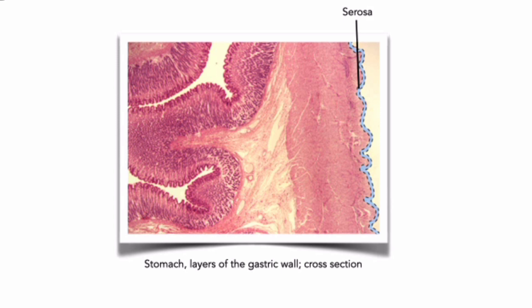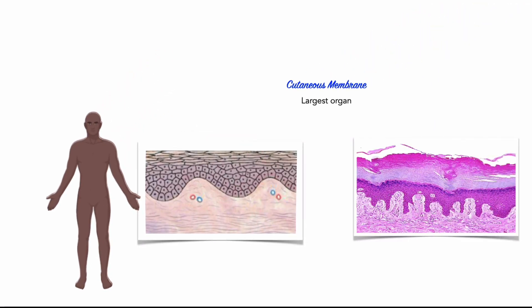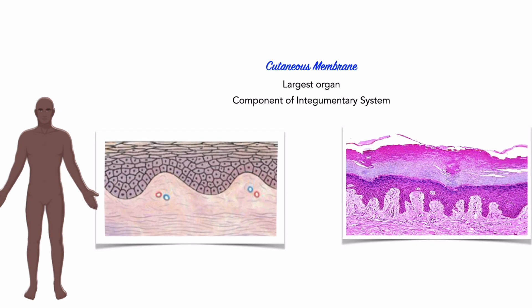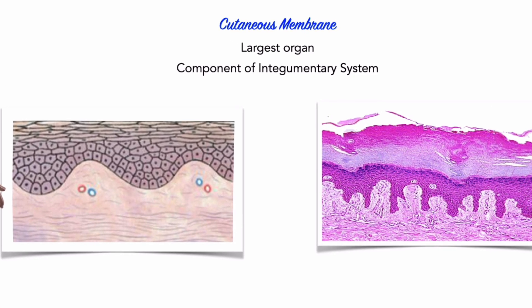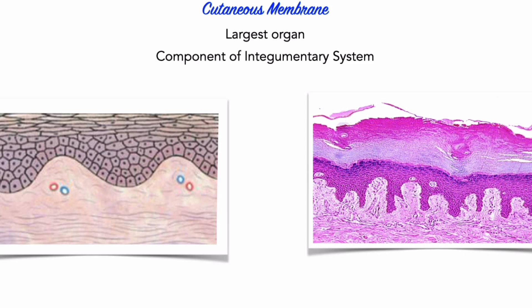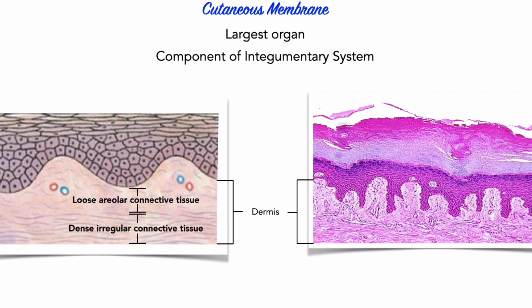Third, the cutaneous membrane. The cutaneous membrane is the tissue membrane we are most intimately familiar with — it forms the skin that covers the surface of our bodies. The skin is the largest organ of the human body, weighing approximately eight pounds and covering 22 square feet in surface area. It is the main organ of the integumentary system. Like all tissue membranes, it consists of connective tissue covered with epithelial tissue. The connective tissue is called the dermis, made of loose areolar tissue reinforced by underlying dense irregular connective tissue. The dermis is covered by a stratified squamous epithelium called the epidermis. In contrast to serous or mucous membranes, the cutaneous membrane is thick, relatively waterproof, and usually dry.